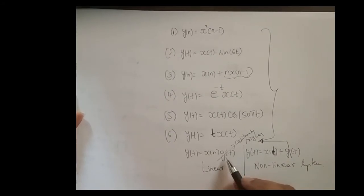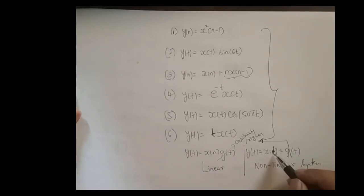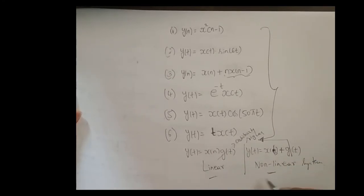Now, if there is a system where the input signal is getting multiplied with some arbitrary signal, it is usually most of the time a linear system. And if you have a system where the input signal is getting added with an arbitrary signal, in that case most of the time it is a non-linear system.